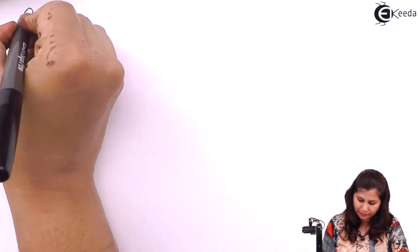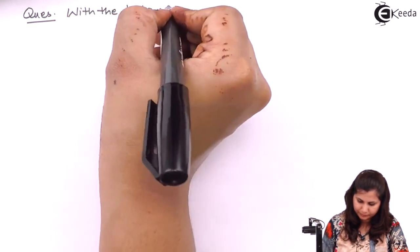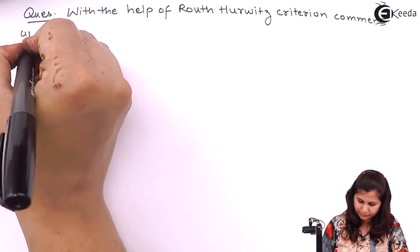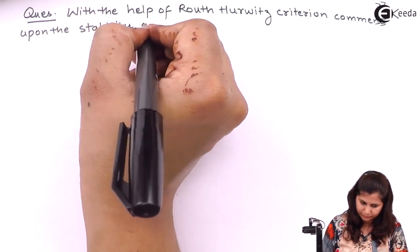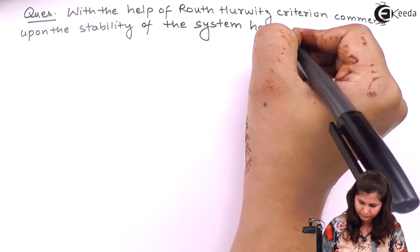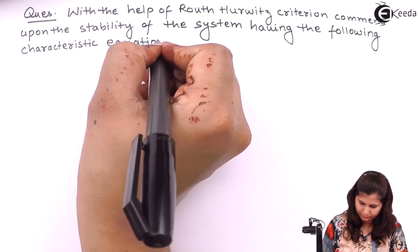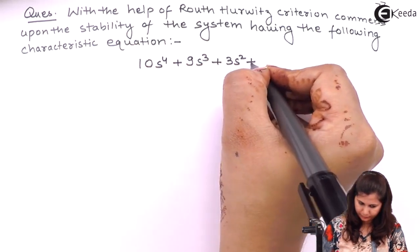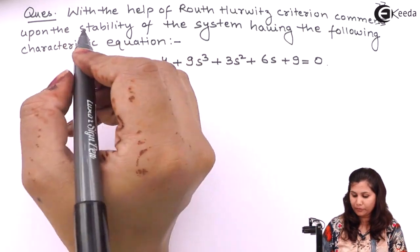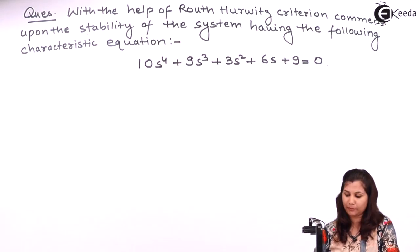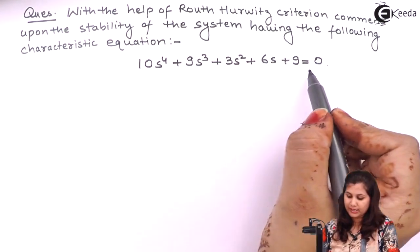Hello friends. In this video we are going to solve a problem on the Routh-Hurwitz criteria. Our problem is: with the help of Routh-Hurwitz criteria, we have to comment upon the stability of the system — that is whether the system is stable or unstable — having the following characteristic equation. So this is the characteristic equation of the system.